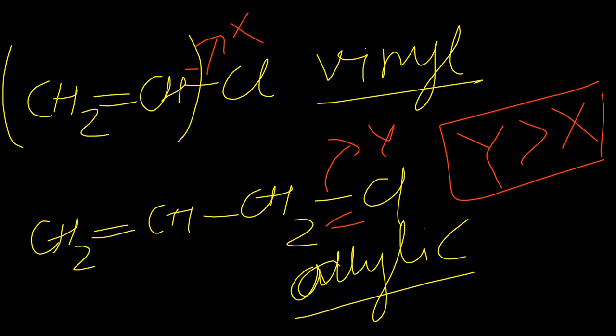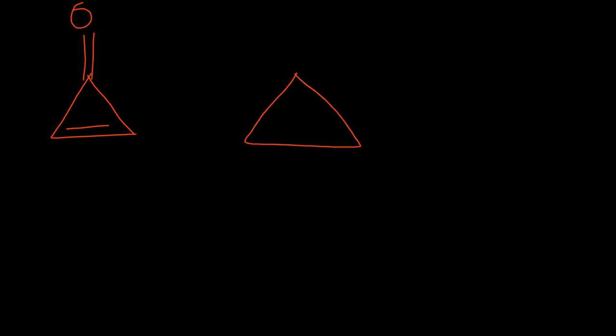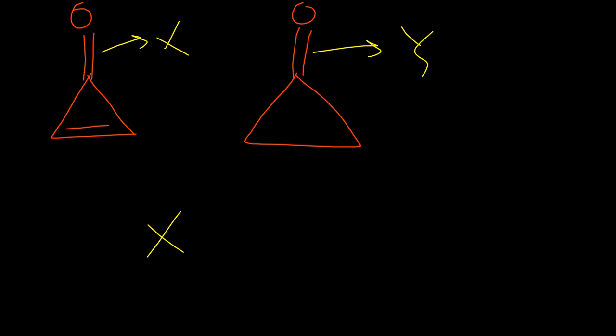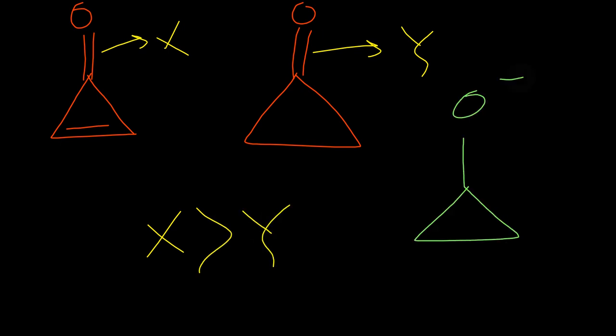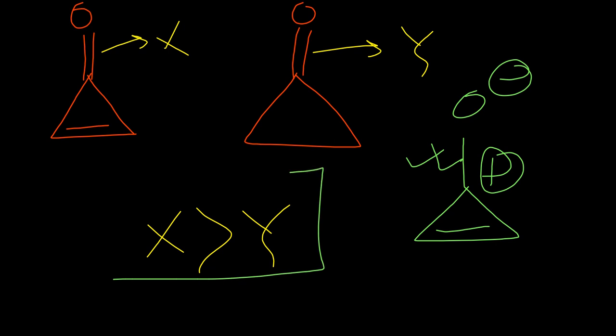Last question on this topic: comparing molecules X and Y. In molecule X, polarization can occur because it forms an aromatic ring, giving more single bond character. So X is greater than Y. Okay students, thank you very much. We will end here, and next time I will introduce a new topic.